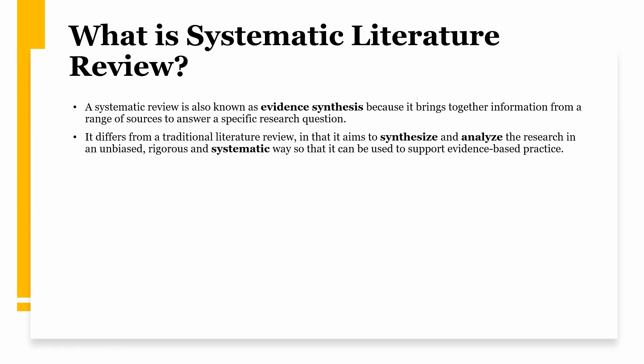Why is it unbiased? For example, if we are conducting a study on the impact of corporate social responsibility on financial performance, and we are trying to find a positive impact, we might tend to exclude studies that report a negative relationship because they go against our proposed hypothesis. A systematic literature review avoids this by being rigorous and systematic — it includes all studies available within a particular timeframe, regardless of their findings.